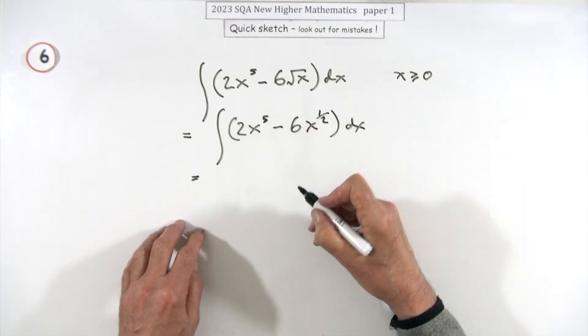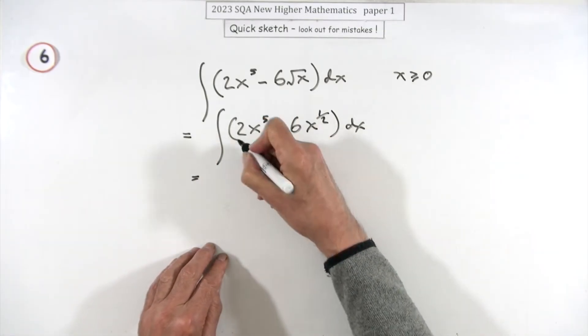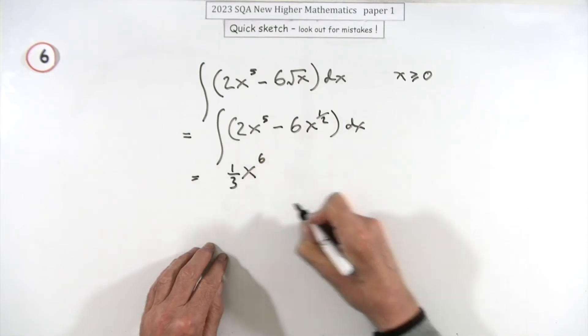Probably a mark for that. Now you just integrate, add one to the power, divide by the power. Up to six, divide by six, I'll just go straight in with the third.